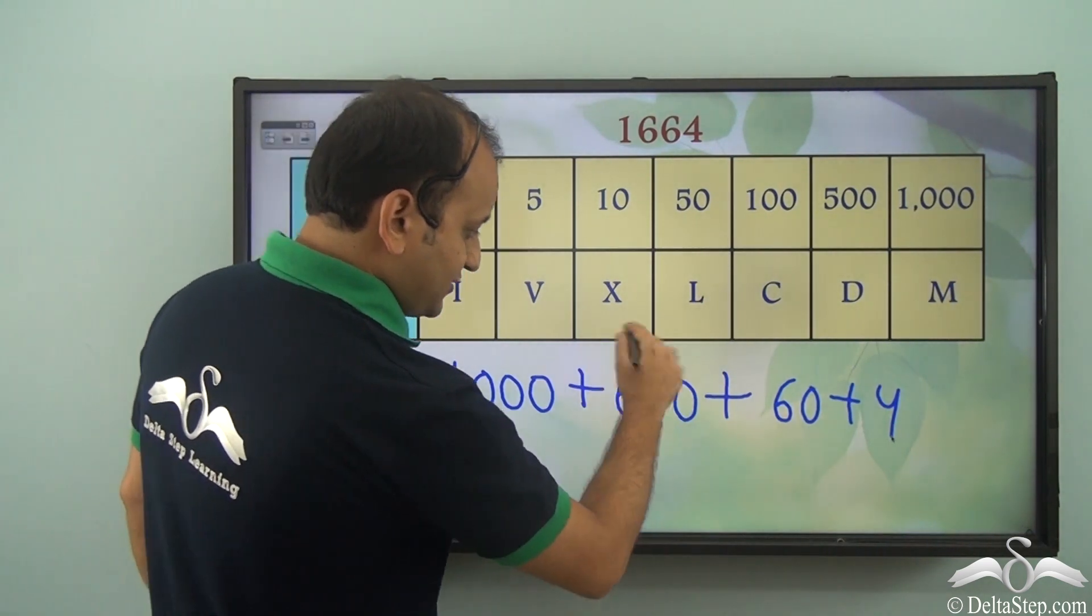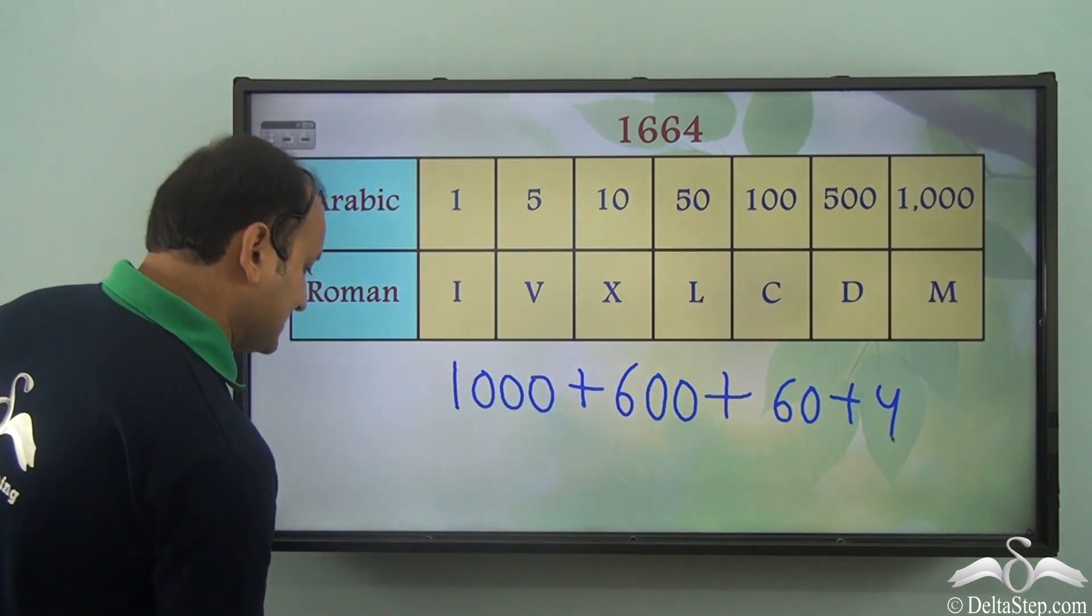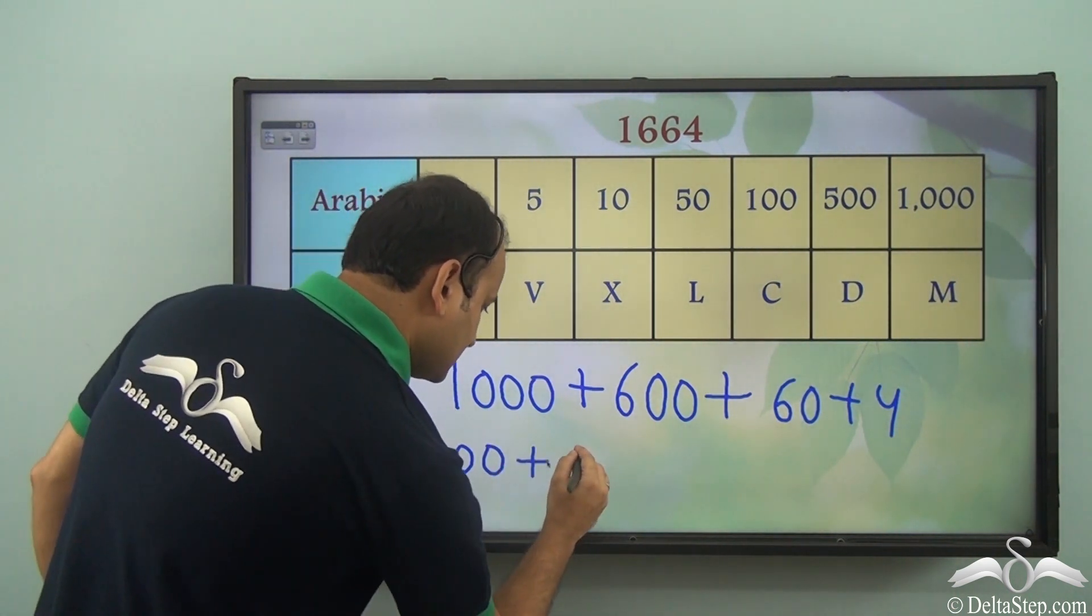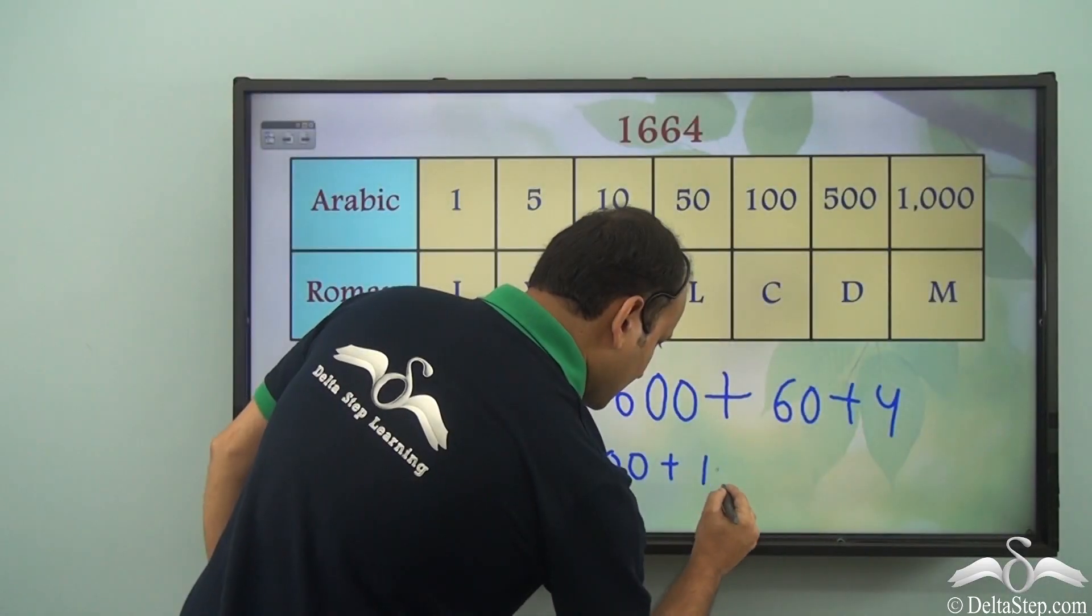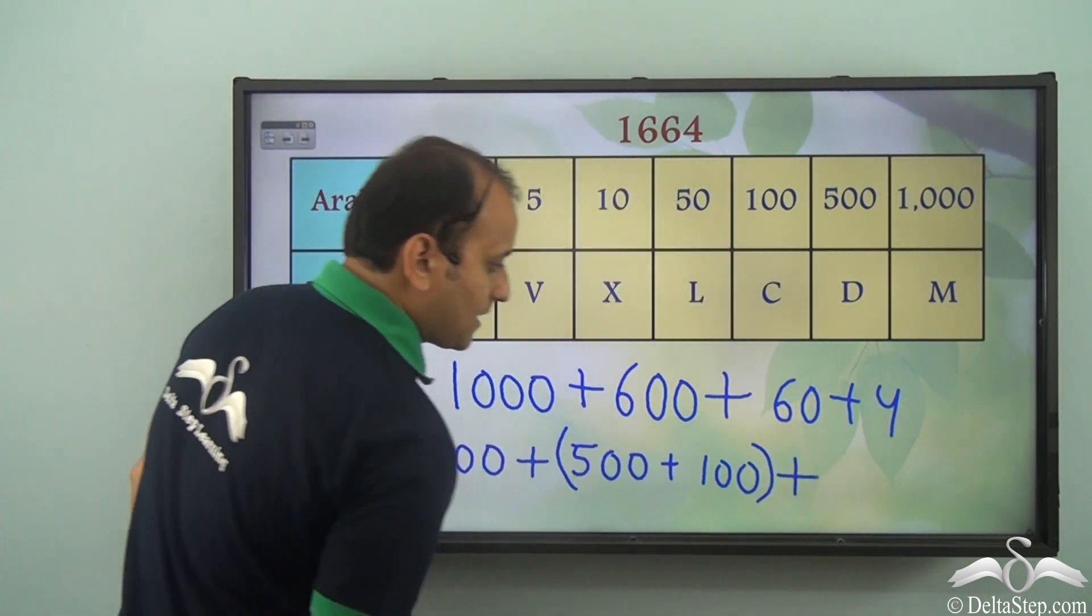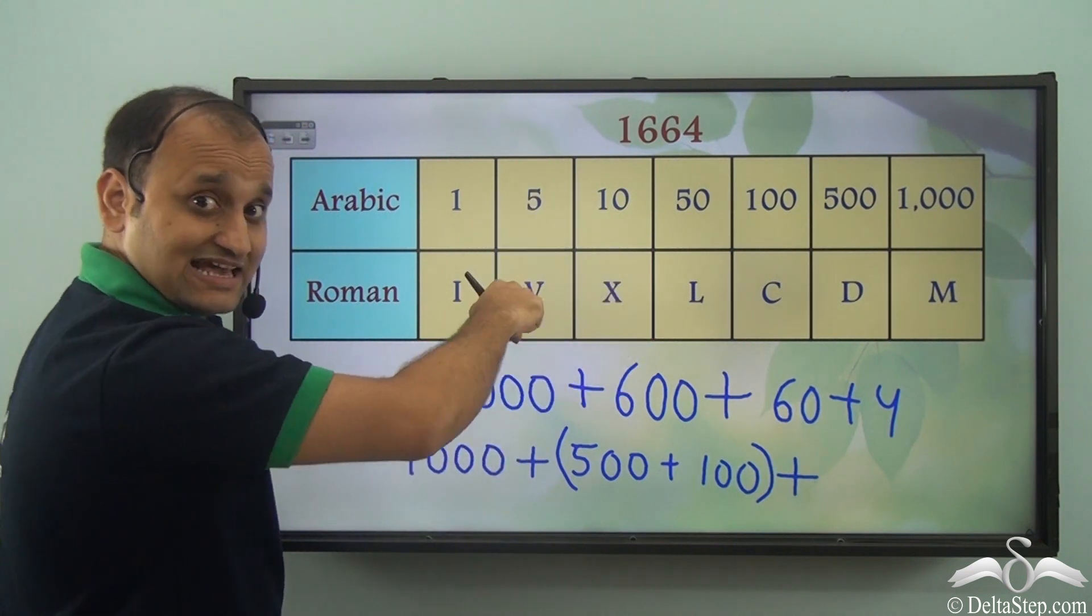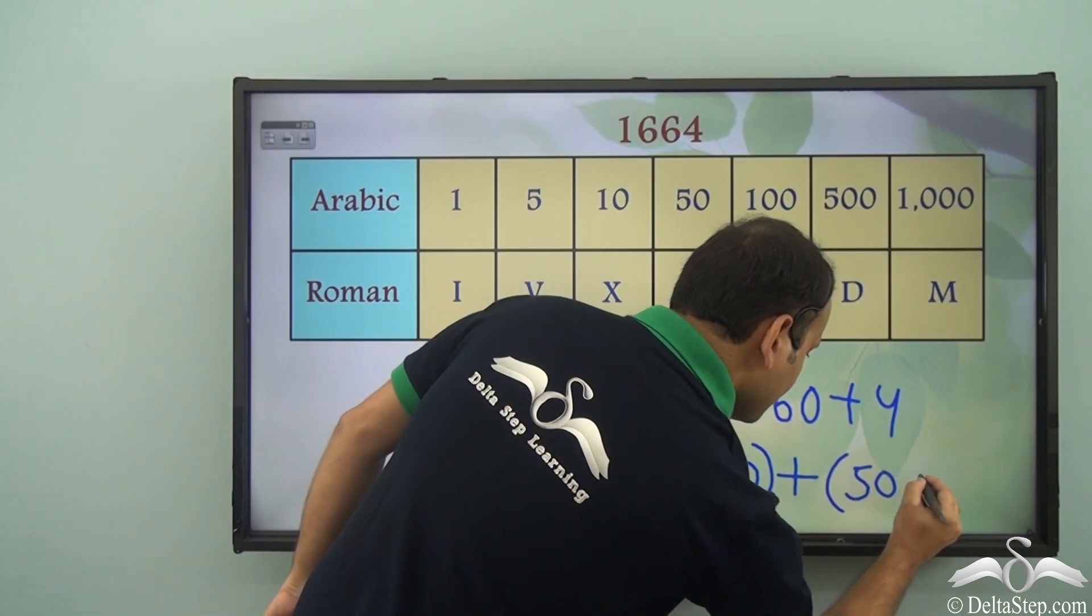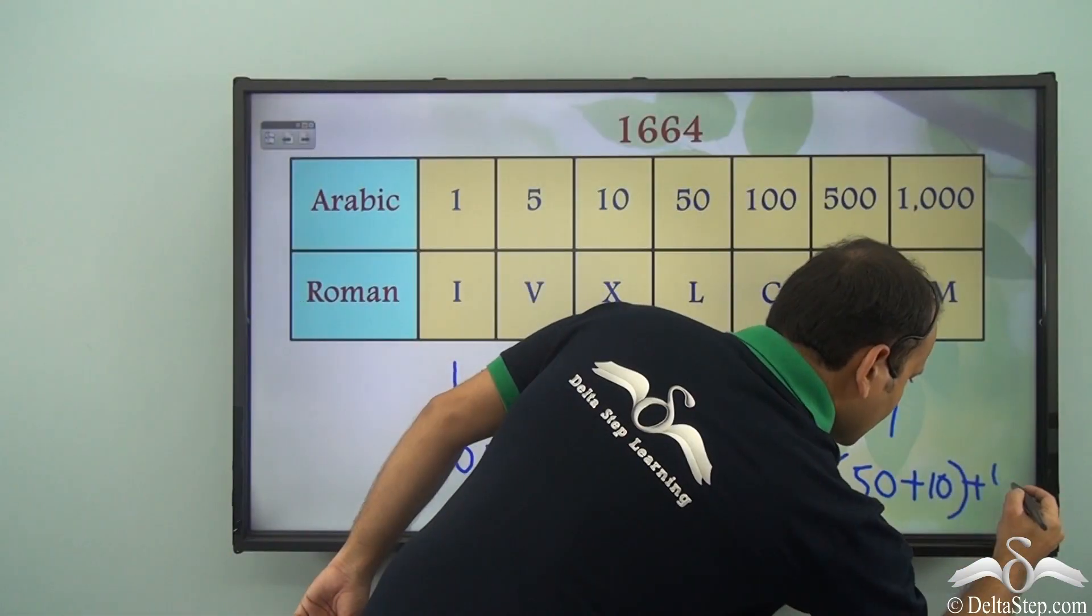Well, we don't have anything for 600. But we have a 500 and we also have a 100. So we can write it as 1000 plus 500 plus 100. So this represents 600 plus... Again, we don't have any symbol for 60, but we have symbol for 50 as well as 10. So we can write it as 50 plus 10, and then we have 4.